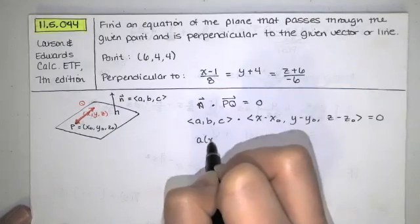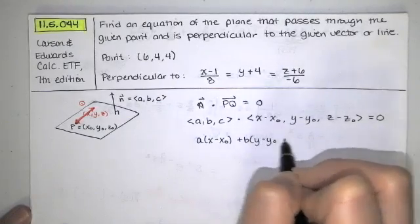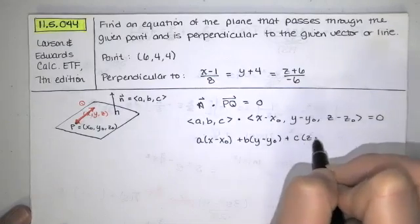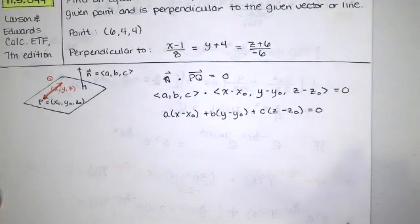When we do that we get a times x minus x naught plus b times y minus y naught plus c times z minus z naught equals zero and that's the equation of the plane. Sometimes we call this standard form.